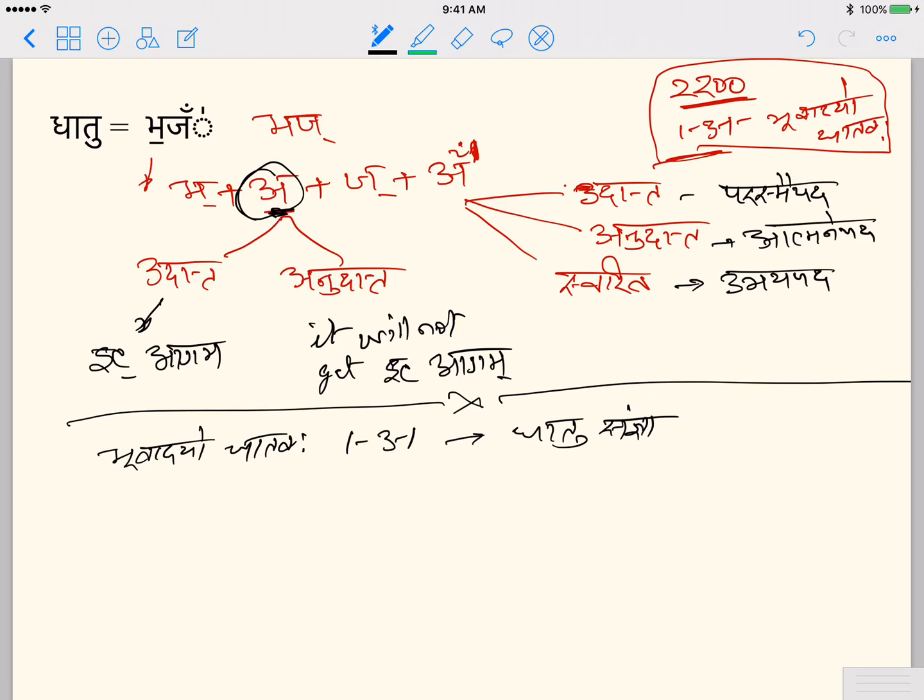Other than that Panini used sanadyanta dhatavah. There is a sutra sanadyanta dhatavah 3.1.32. So starting from dhatu rekacho kriya hama kriya samabhihare yang, so yang pratyaya begins. And there are many others, about 12 to 14 pratyayas. Whichever letters end in those pratyayas, they are called sananta. So these sanatas based on this sutra, they also get dhatu path.